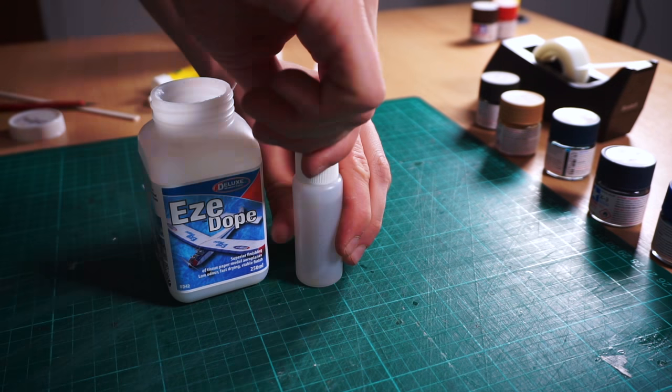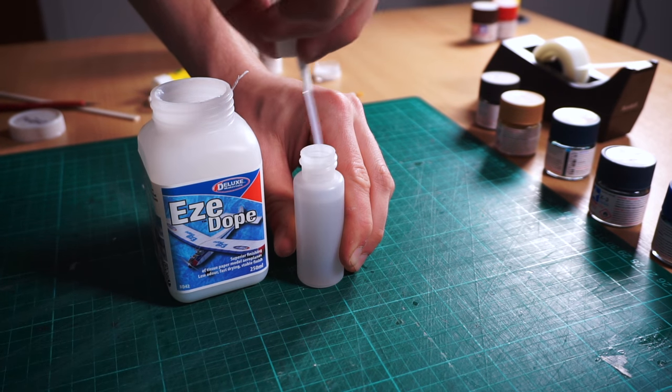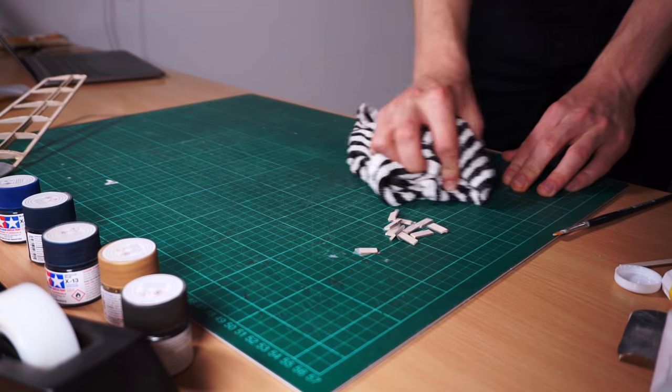Right now we're going on to the water shrinking phase. As described in the kit instructions, the tissue covering is water shrunk. This means that by wetting the tissue it will contract and go tight over the structure. With Easy Dope, use a 5% solution of Easy Dope and water to shrink the tissue instead of just plain water.